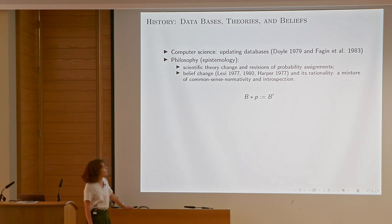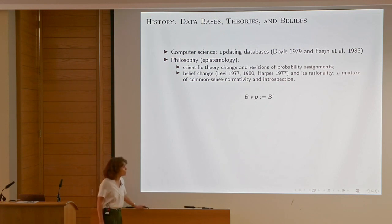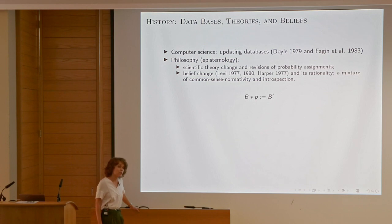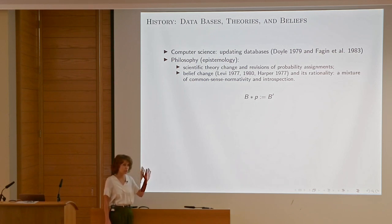In belief change — a very prominent framework in philosophy — we are concerned with the rationality of belief revision. Consider an agent revising beliefs, for instance, reading information on Facebook and revising beliefs about whom to vote for. It would be nice to understand the rationality constraints of such behavior. Is there any logical way to grasp what kind of properties should be satisfied? So this is the rough formalism: we have a belief set or belief base, new information comes in, and we switch to a new belief state.